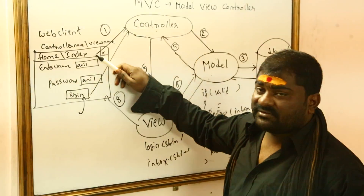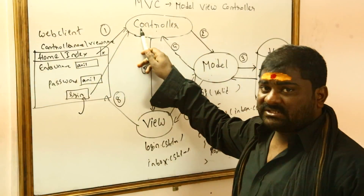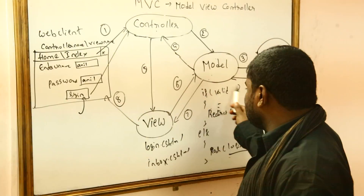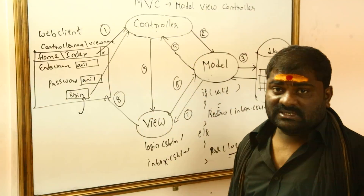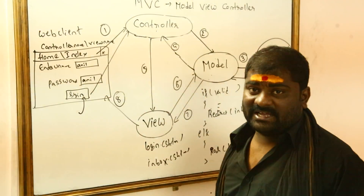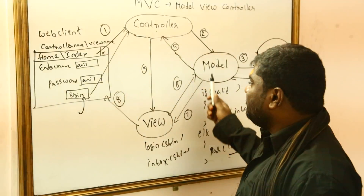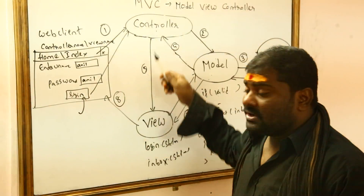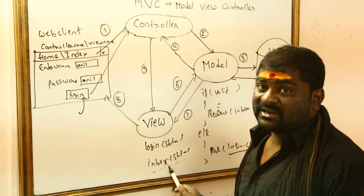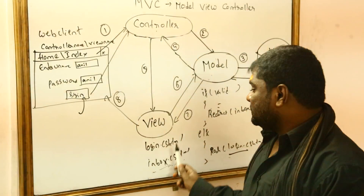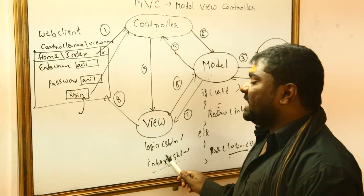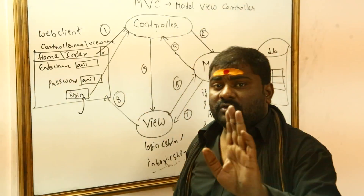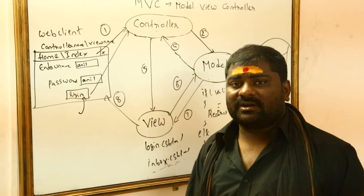Whenever the user gives a request, the controller responds and forwards it to the model. The model communicates with the database, executes the code, and returns either true or false to the controller. If true, the controller invokes inbox.cshtml; if false, it invokes login.cshtml. The view then goes to the model, gets the response, and displays it in the browser. That is what the controller is for — this is MVC.